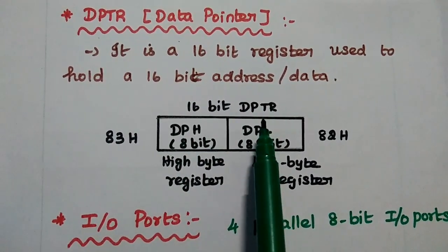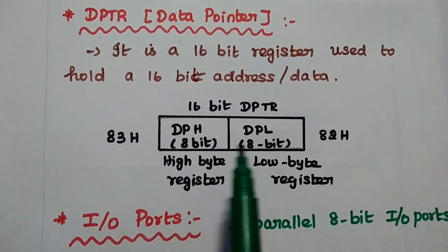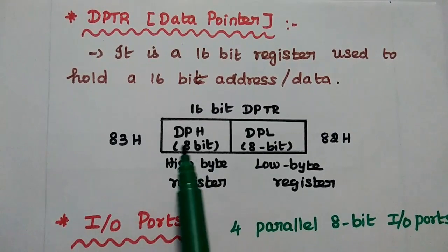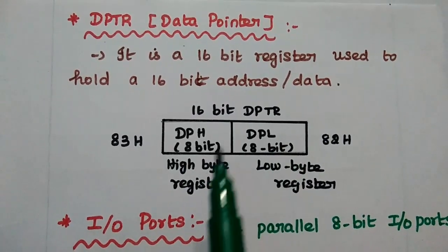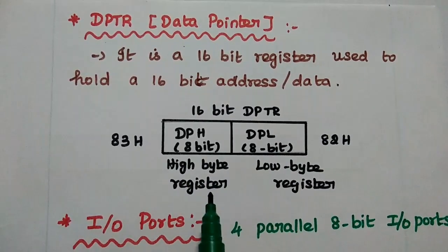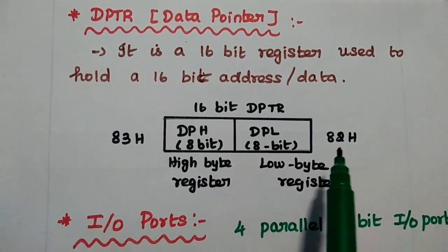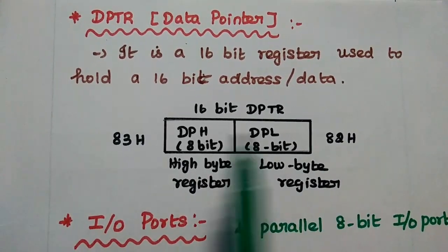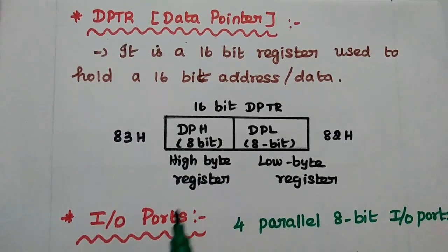The 16-bit DPTR consists of two 8-bit registers: DPH (higher byte register) and DPL (low byte register). The address for DPL starts from 82H and DPH is at 83H.